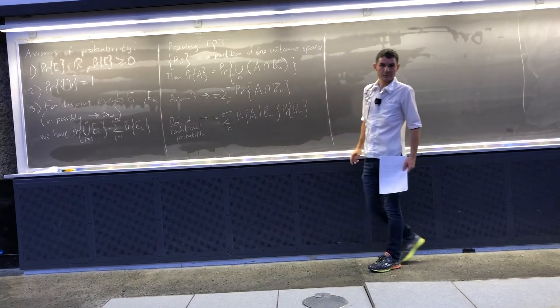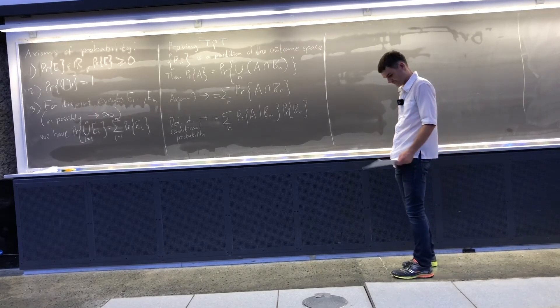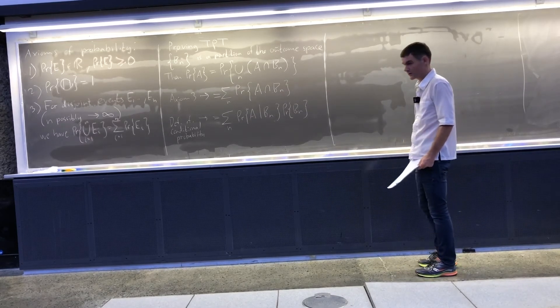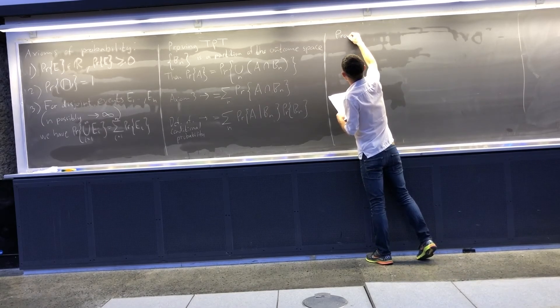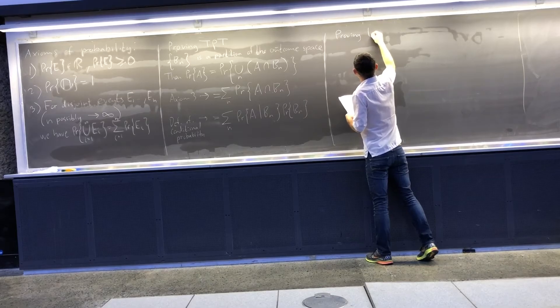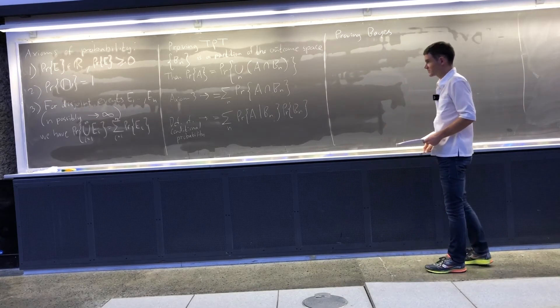That was a simple enough proof for the total probability theorem. Let us then also look at Bayes rule when we are looking at these formations. This is the basic proof of Bayes rule.